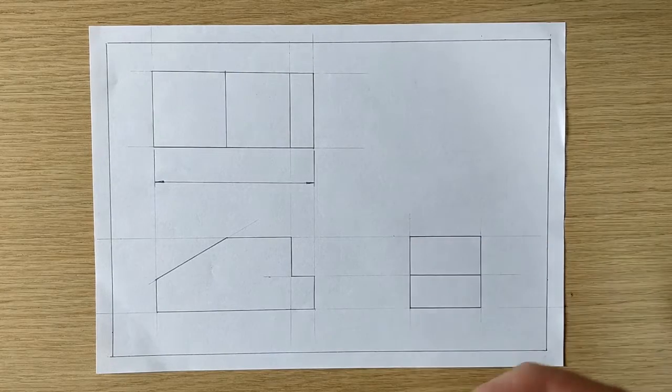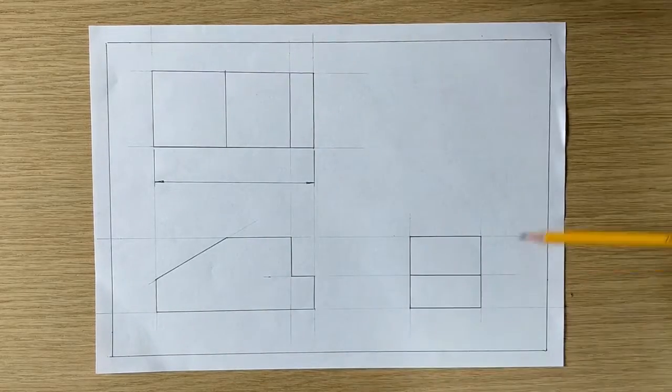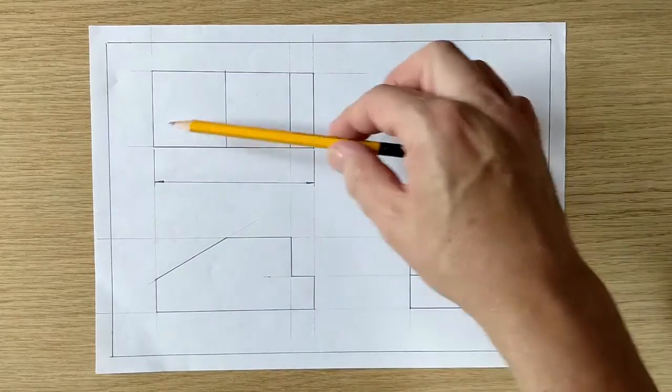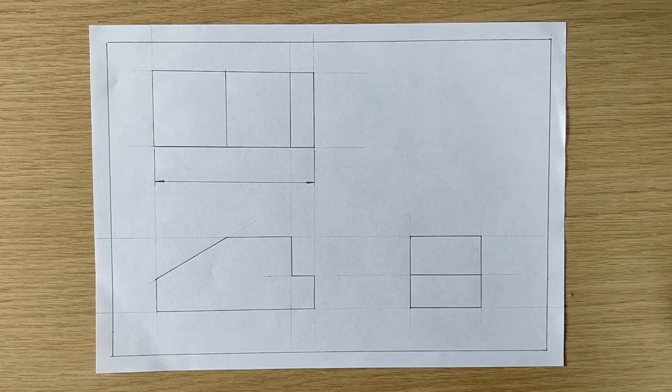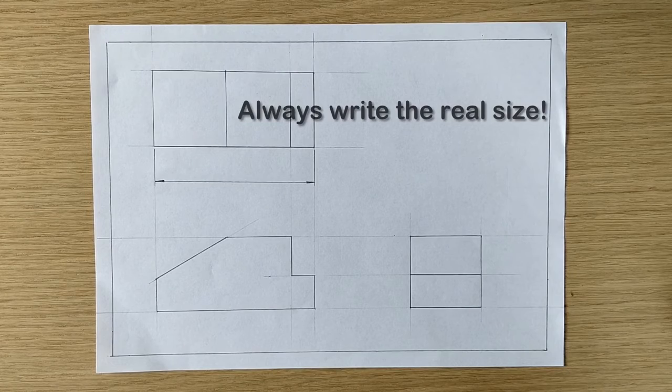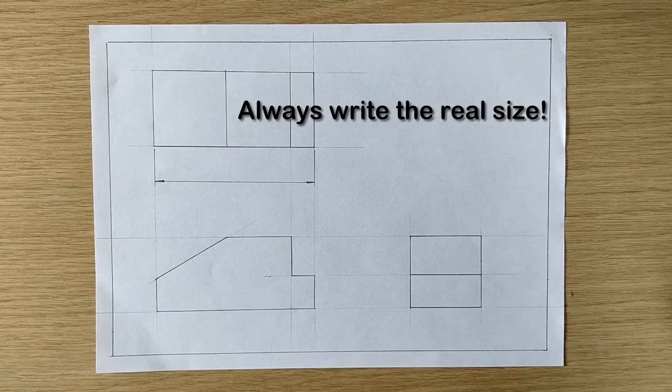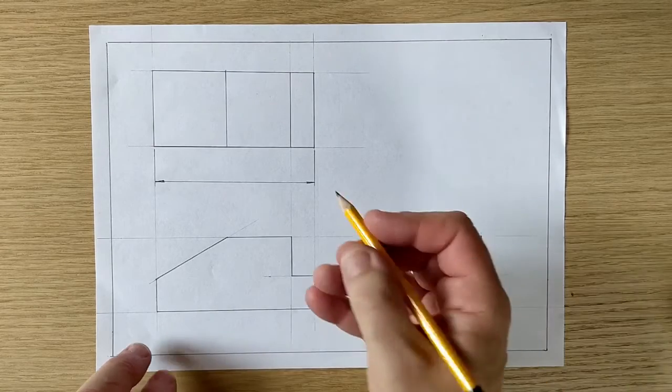And then we need to put the number on. Now we're working at full scale so we're going to put the same number on as we used to draw it. If you were working at say half scale you would still put the real dimension on, otherwise you would end up with something half the size of course.